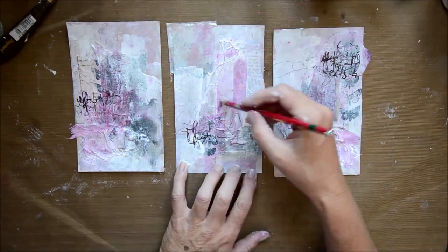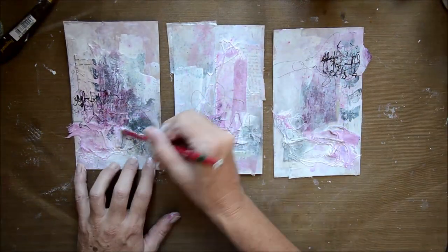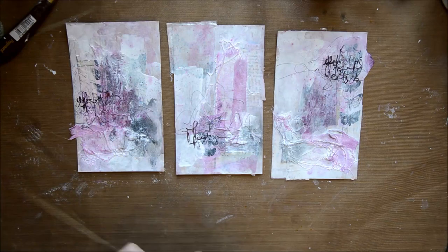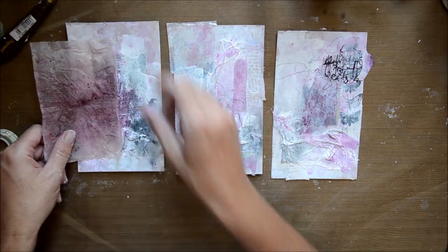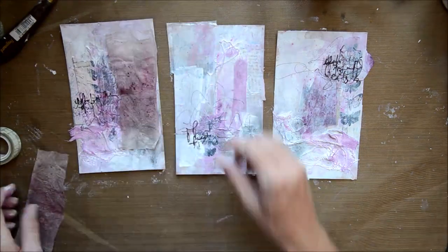Then just with the Stabilo in the graphite, just adding some scribbly lines. And then I want to put a bit more of the tea bag in there.